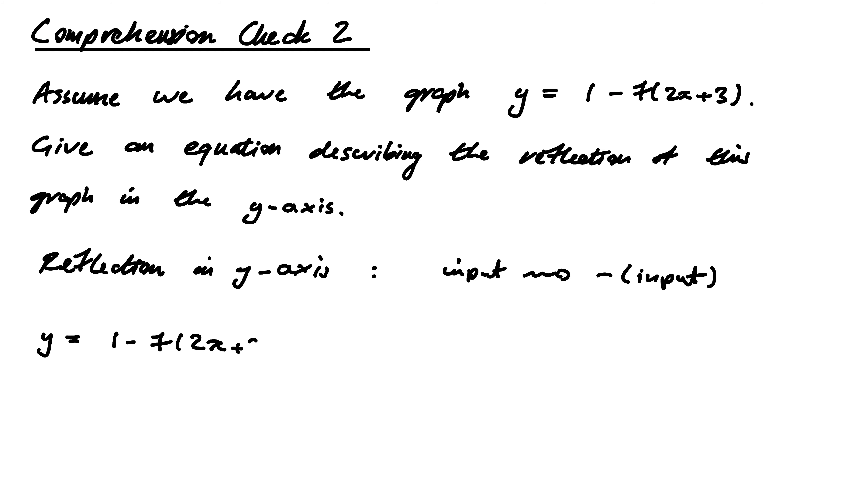So this would be replaced with y = 1 - f of 2(-x) - 3, where 2x is replaced with 2(-x), and that's the only difference. You can simplify this to y = 1 - f(-2x - 3), and you're done.